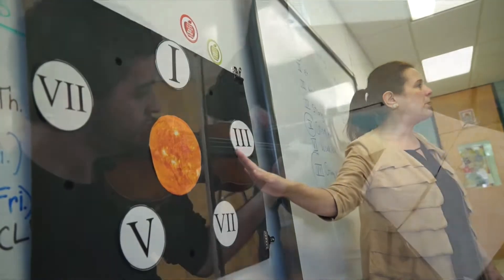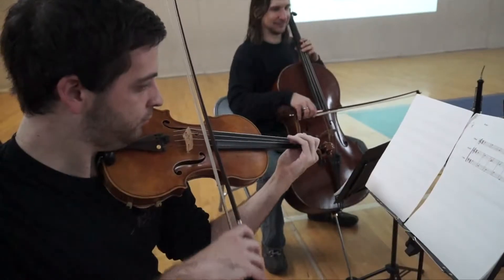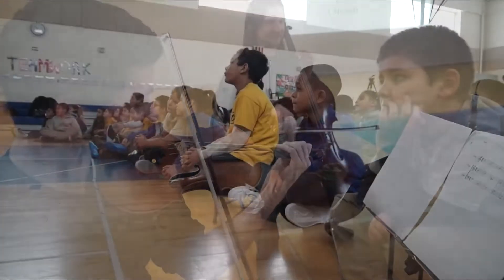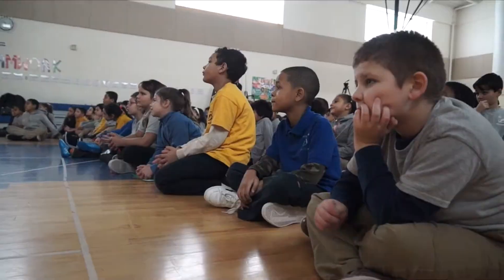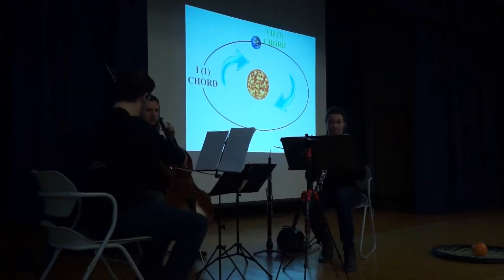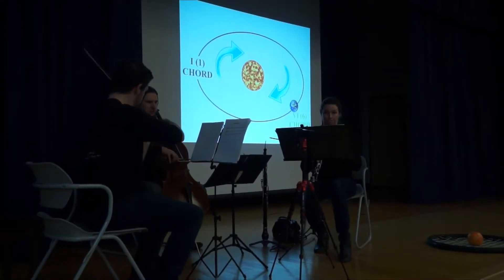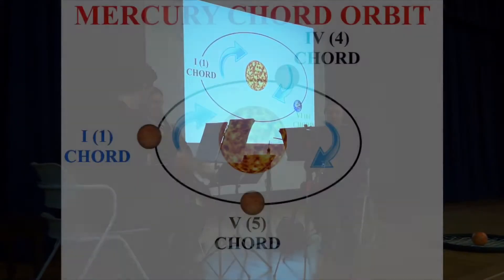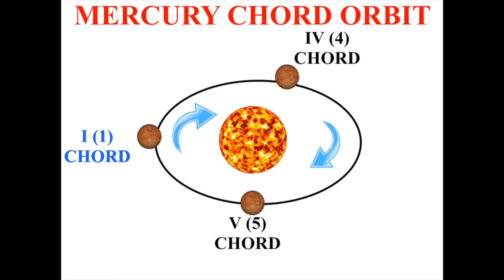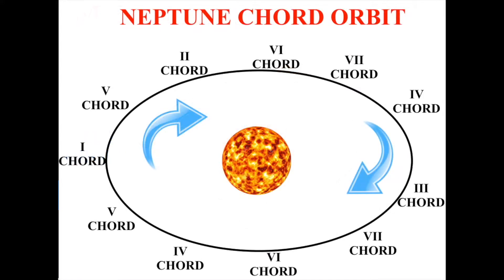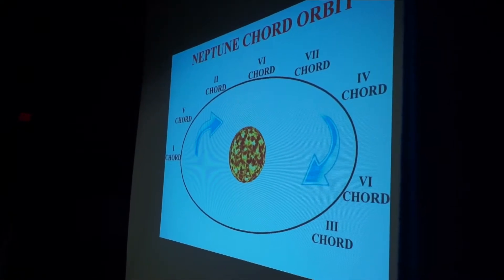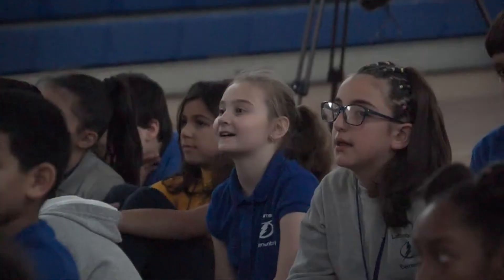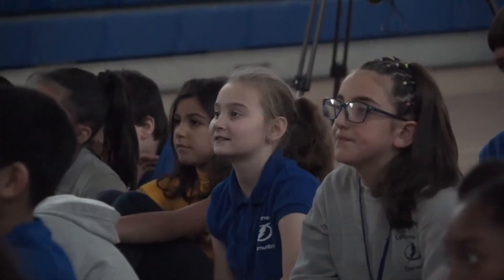In our school performances the students heard a piece by Mozart that orbited just like Mercury, with short quick cycles of chords with a strong gravitational pull. By the time we worked our way out to Neptune, we heard a piece by Shostakovich which had a very long, slow chord cycle composed of chords with a weak gravitational pull.